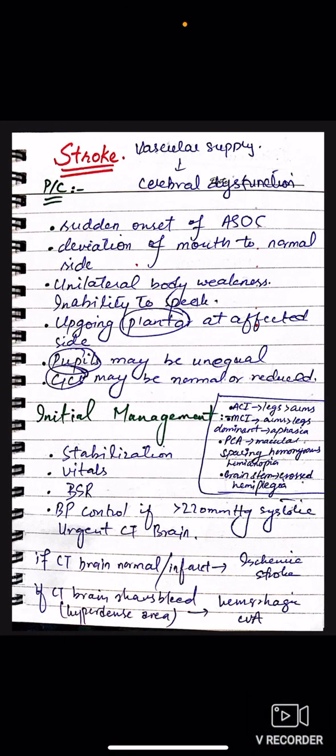The next emergency medical case is about stroke. Stroke occurs when the brain's vascular supply is compromised, resulting in cerebral dysfunction. Stroke is of two types: ischemic stroke and hemorrhagic stroke. When a patient with stroke comes to you, you have to differentiate between ischemic and hemorrhagic stroke because the treatment and management are different. If you treat an ischemic stroke with hemorrhagic stroke management, it can convert to hemorrhagic.